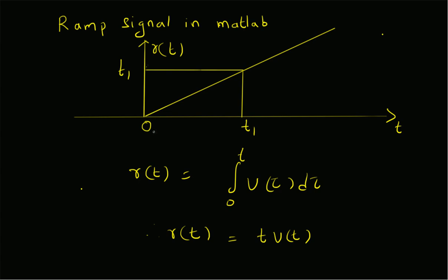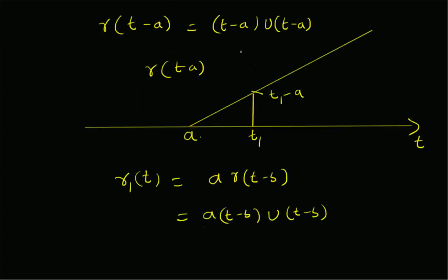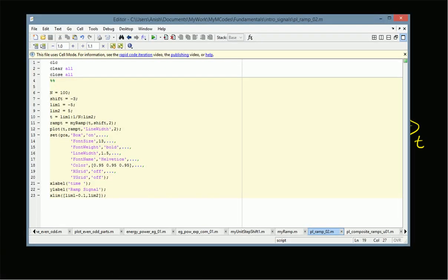To summarize, in this video we have looked at the plotting of a ramp signal: the basic ramp signal, the shifted one, and also a scaled and shifted ramp signal. The ramp signal r(t) is given by t times u(t); the shifted ramp signal is given by (t minus a) times u(t minus a); and a scaled and shifted ramp signal is given by a times (t minus b) times u(t minus b).